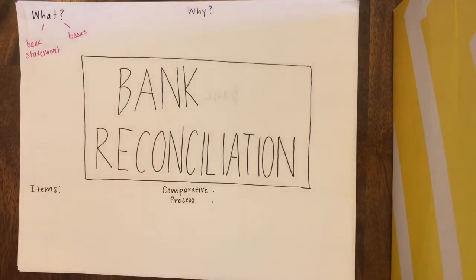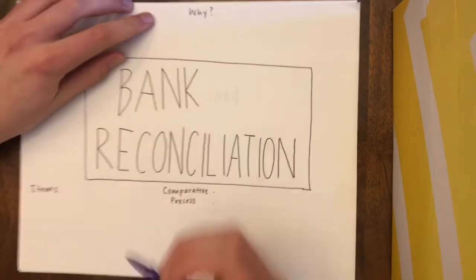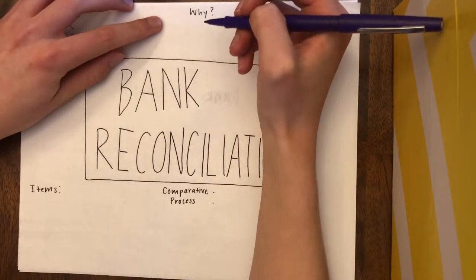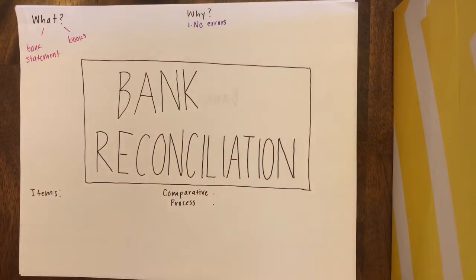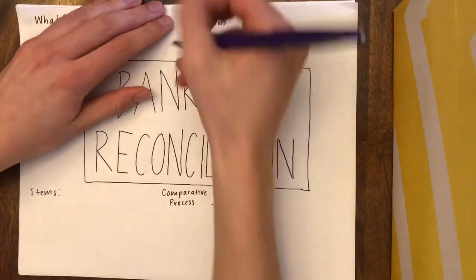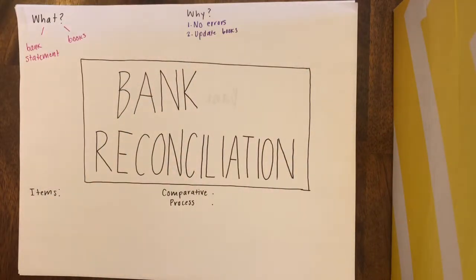Why is bank reconciliation used? There are a few reasons that bank reconciliation is used in accounting. First of all, it is to ensure that there are no errors on the statement or in the books. Secondly, bank reconciliation is used to update books for new items. And third, bank reconciliation is used to calculate how much cash we have after all outstanding items are cleared.